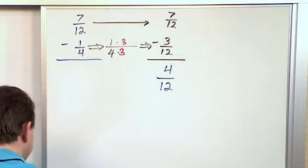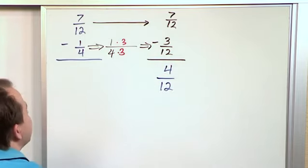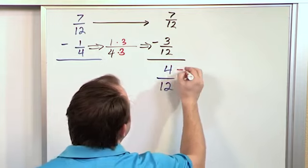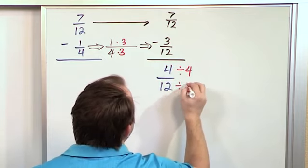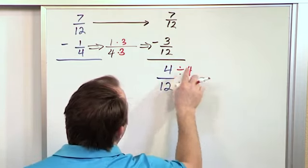So the answer is 4 twelfths but I always have to check, is this fully simplified? And then I see right away that I can divide the top by 4 and the bottom also by 4. 4 divided by 4 is 1.